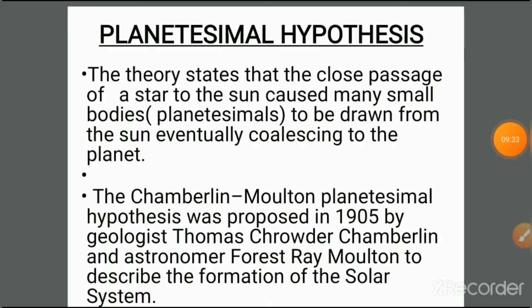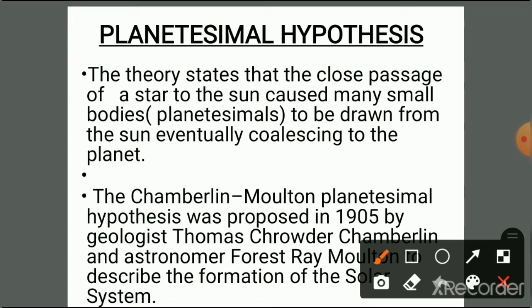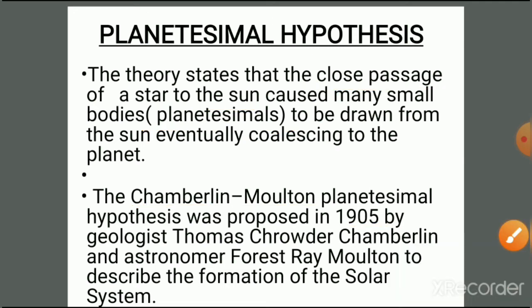Next, we move to the planetesimal hypothesis. This theory states that the close passage of a star to the Sun caused many small bodies, or planetesimals, to be drawn from the Sun, eventually coalescing into planets. It was proposed by Chamberlain and Moulton in 1905.